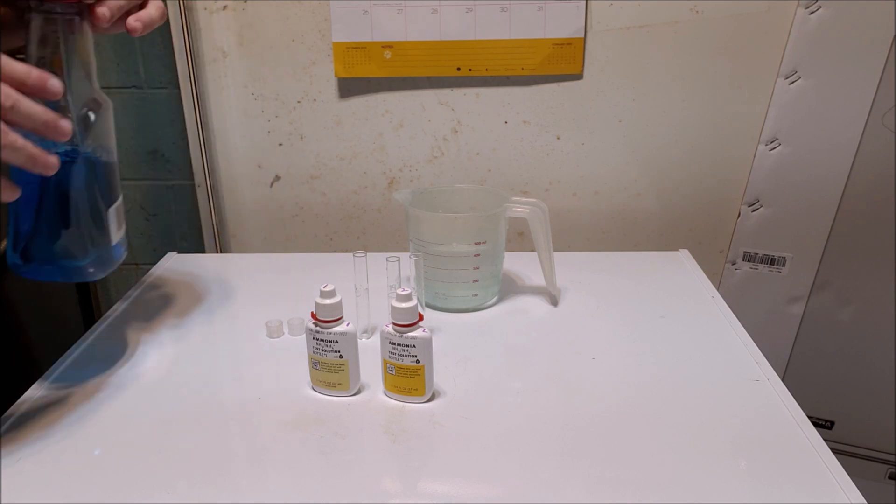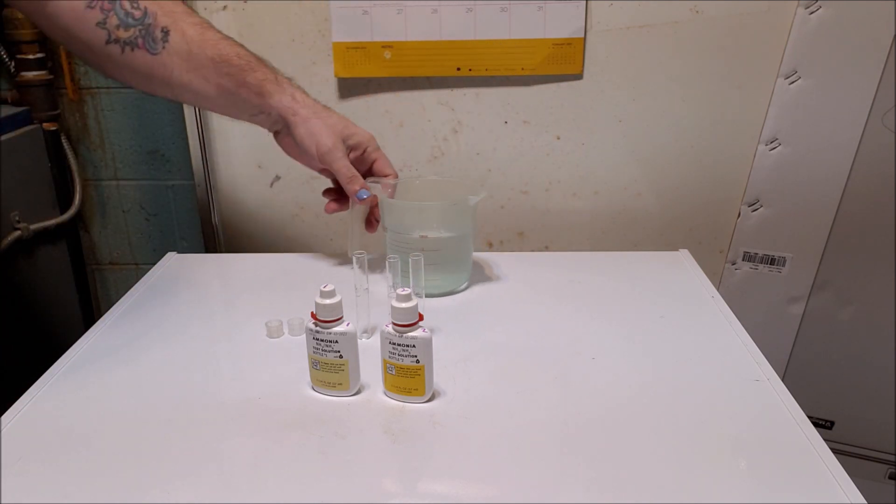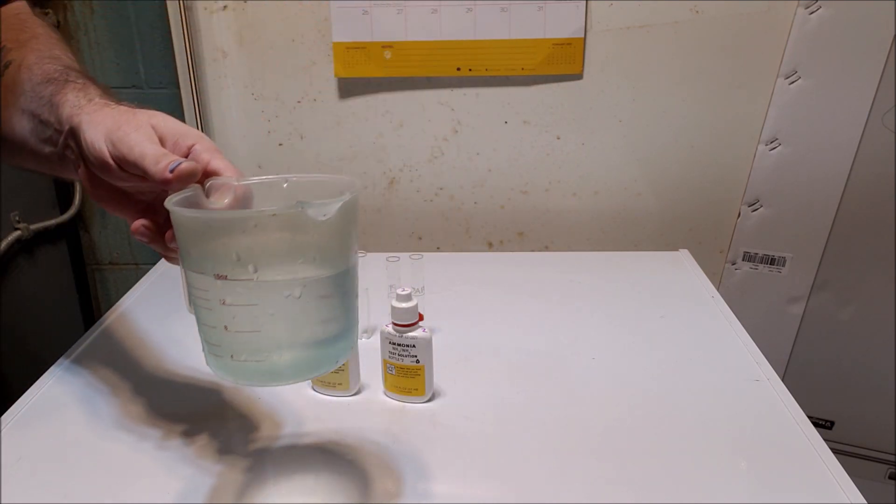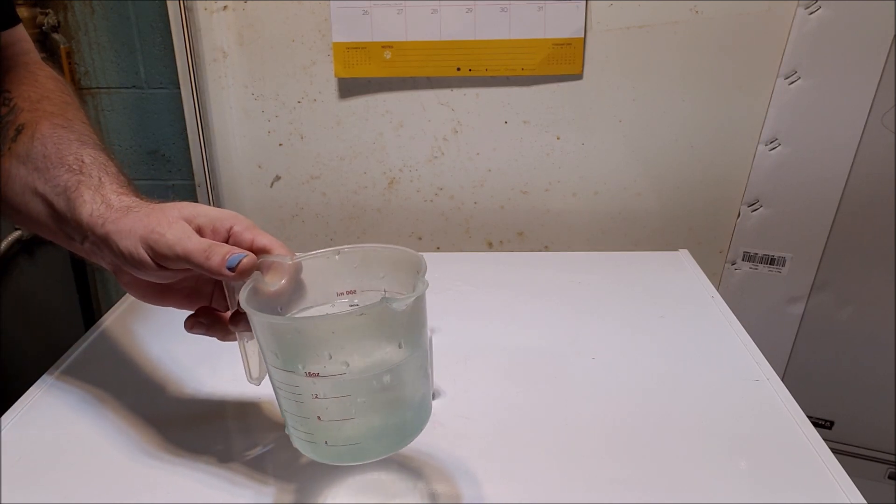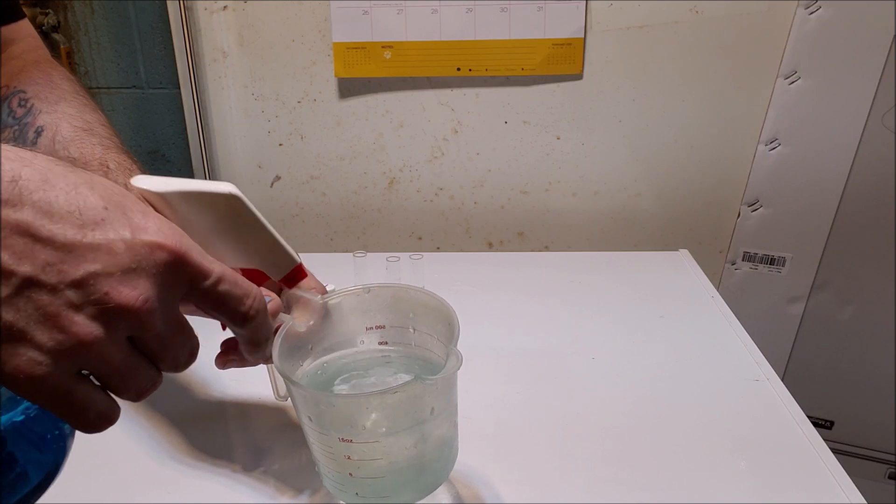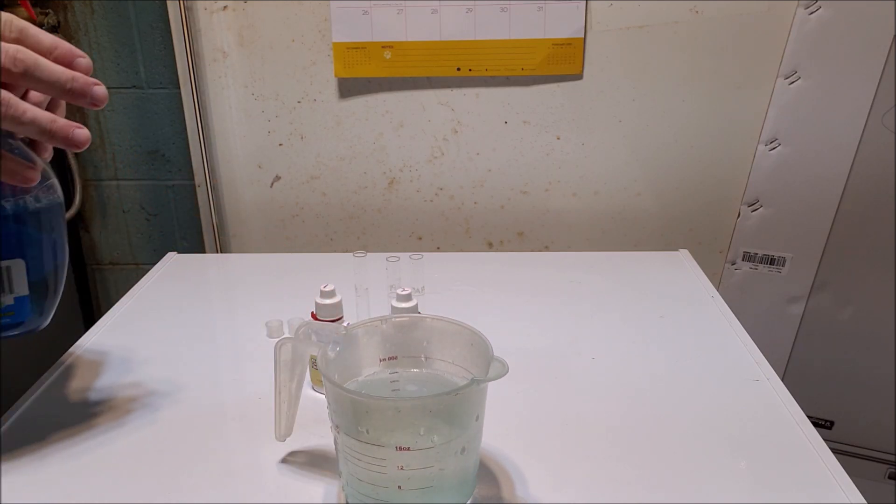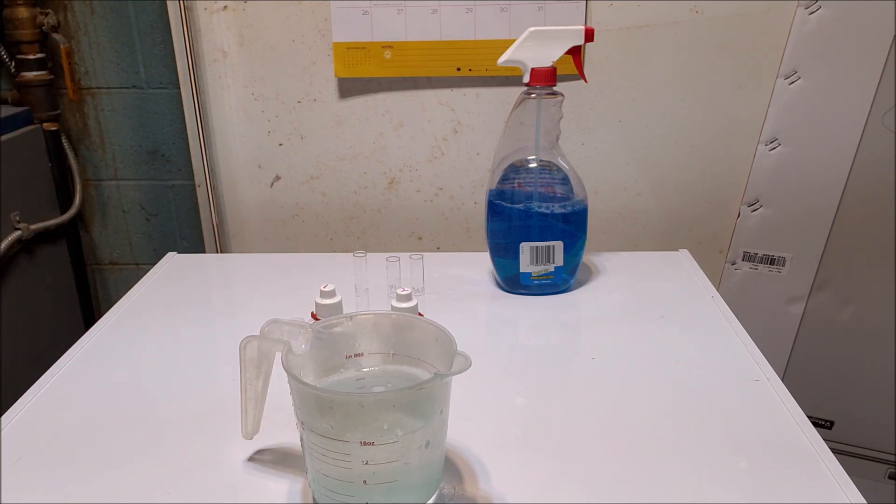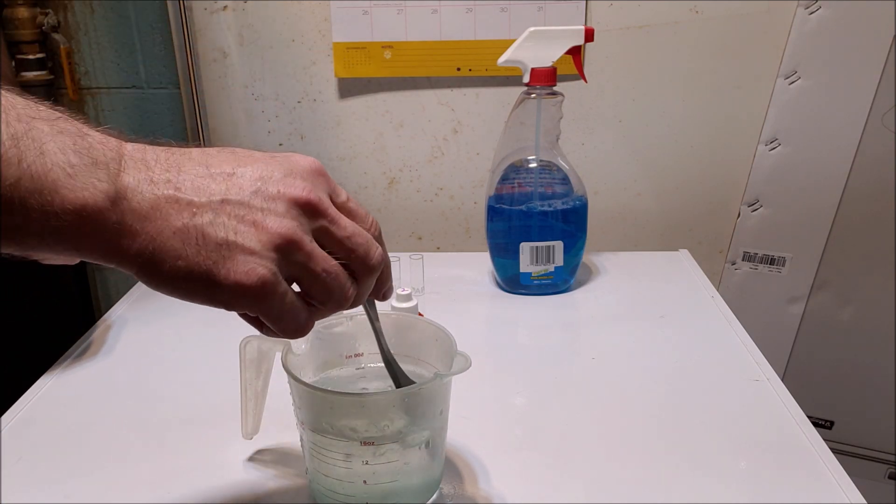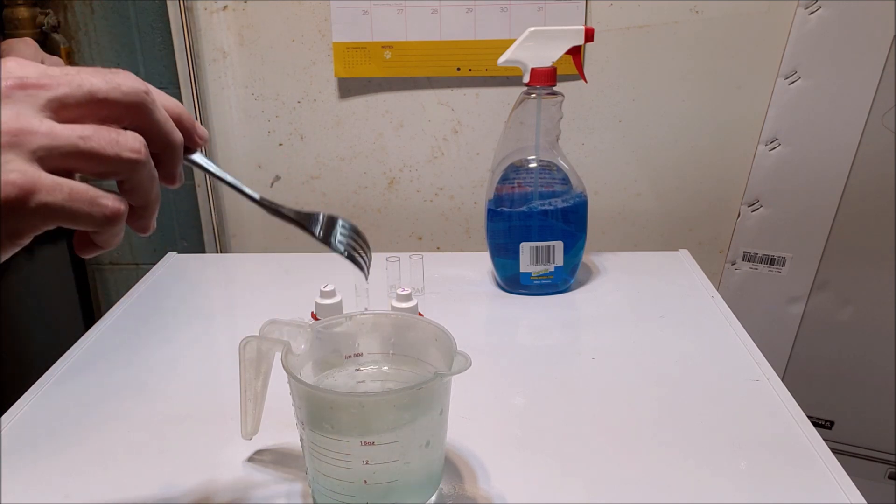Alright, here's the experiment we're going to do. We are going to take some water. I know this looks like it's a little bit blue already, that is from medication staining the cup, that is fresh water right out of my tap, no ammonia. We're going to put a little squirt of Windex in there, that will give us a little bit of ammonia, but not a whole lot. I'm not sure what that's going to come out to be, but that's part of the point here.